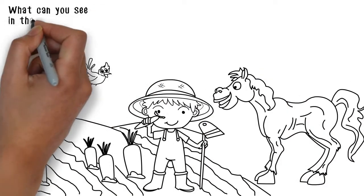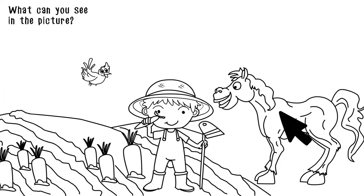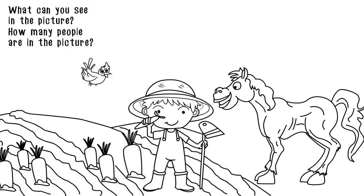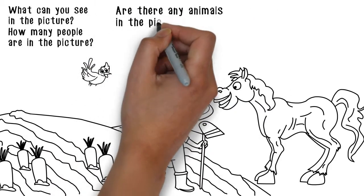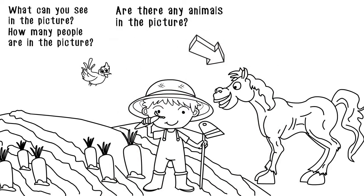What can you see in the picture? I can see a boy, a horse and a bird. How many people are in the picture? There is one boy in the picture. Are there any animals in the picture? Yes, there is a horse and a bird.